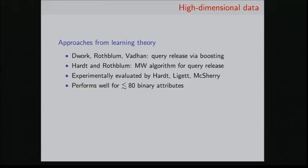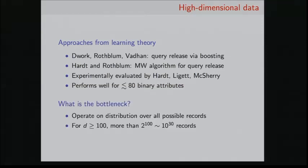So there are many approaches to solving this problem. I'm going to focus in this talk on approaches from learning theory, but there are many other approaches. Two algorithms that I want to focus on are one by Dwork, Rothblum, and Vadhan, which they give query release via boosting, and a different algorithm by Hardt and Rothblum, who give a multiplicative weights-based algorithm for releasing answers to these queries. This second algorithm has been evaluated experimentally by Hardt, Ligett, and McSherry. And it performs pretty well when the number of binary attributes is not too big. So what is the bottleneck? Well, this second algorithm operates on distributions over all the possible records. So we can see that when the number of attributes gets a little too big, say for the number of attributes that's bigger than 100, the number of records gets really enormous. For more than 100 attributes, we have something like 10 to the 30 records, and this becomes quickly intractable.